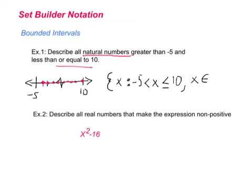In set builder notation this would look like: the set of all x's such that x is greater than negative 5 and less than or equal to 10, and x is an element of the natural numbers.